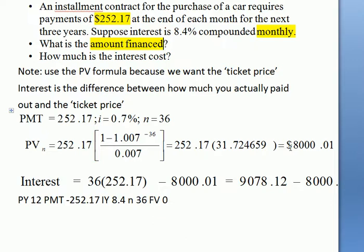That would be how much you actually paid out. That was the ticket price. The interest is the difference between how much you paid out in cash and how much the ticket price was. The ticket price was what you could have bought it for if you'd had that much cash in your pocket and you didn't need financing.